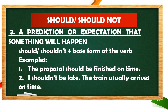Should and should not can also be used in expressing a prediction or expectation about something that will happen. Example: 'The proposal should be finished on time,' meaning the speaker is expecting that the proposal will be finished on time. Second example: 'I shouldn't be late. The train usually arrives on time.' The speaker is expecting or predicting that he should not be late because the train usually arrives on time.